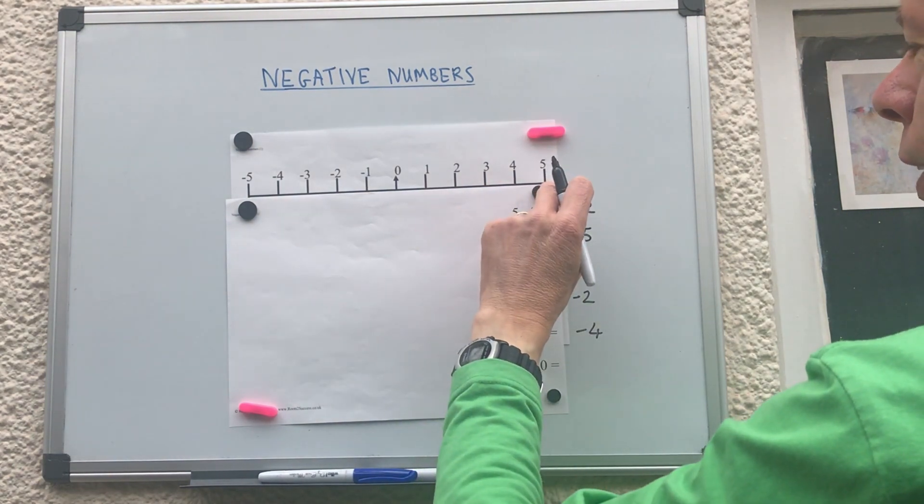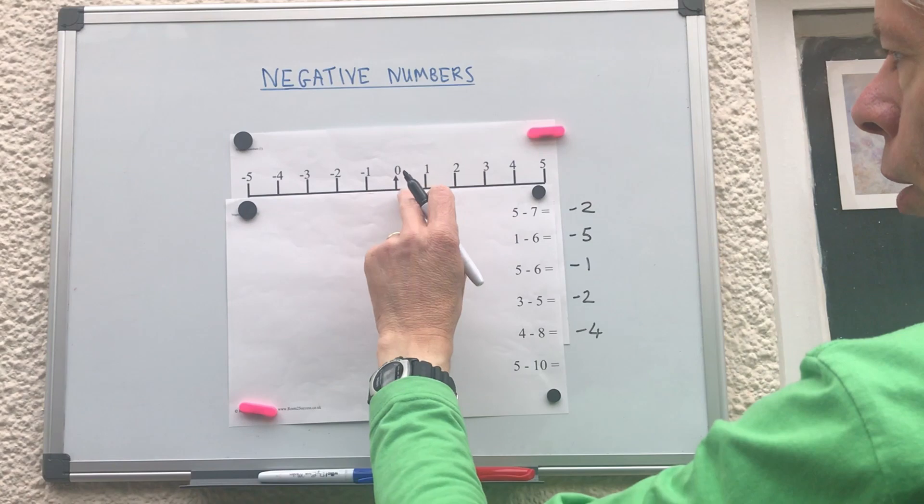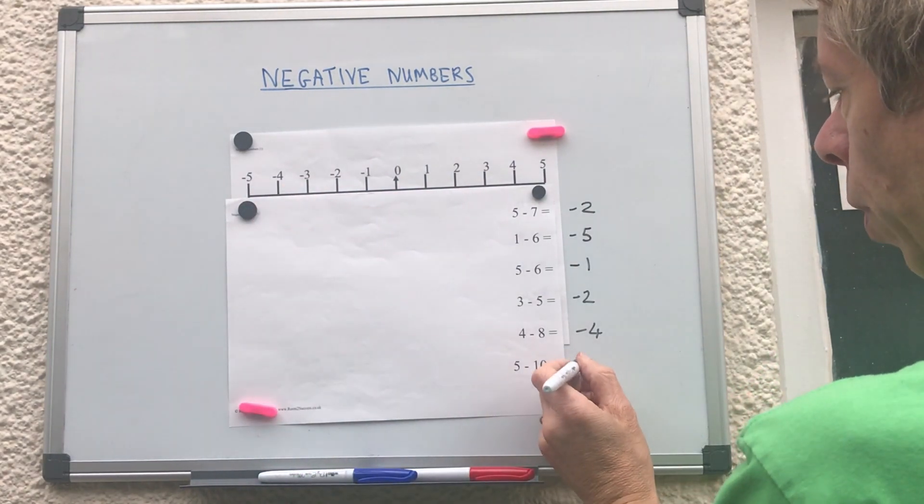Five take away ten. Start on five, go back ten steps. One, two, three, four, five, six, seven, eight, nine, ten. So that was minus five.